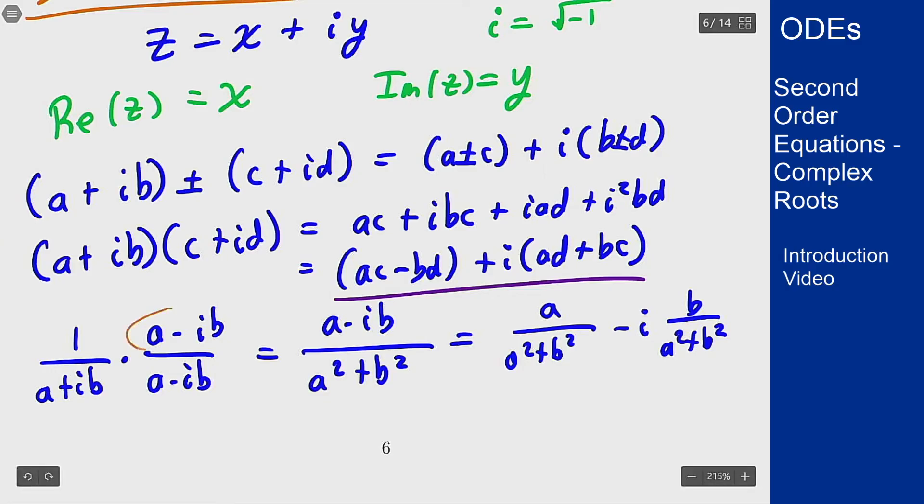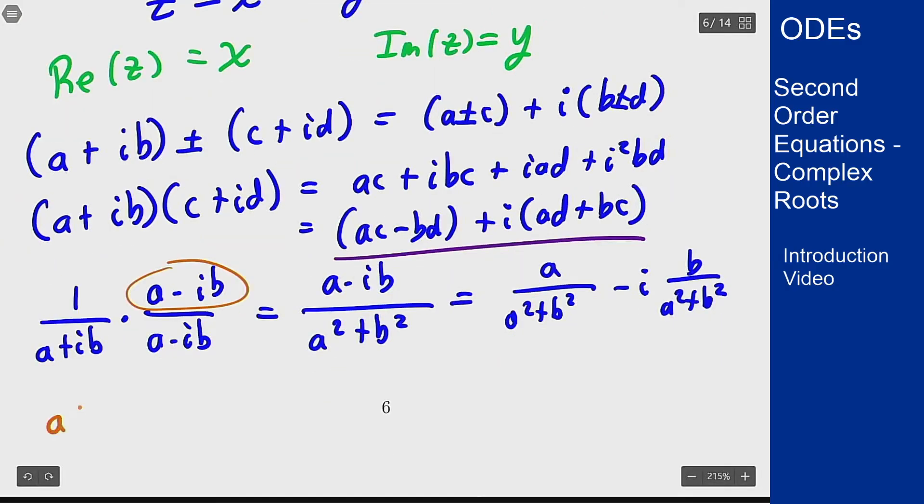This thing here was the complex conjugate, so (a + ib) with a bar over the top is complex conjugation: (a - ib). We also have the modulus of a complex number which is the square root of a² + b².